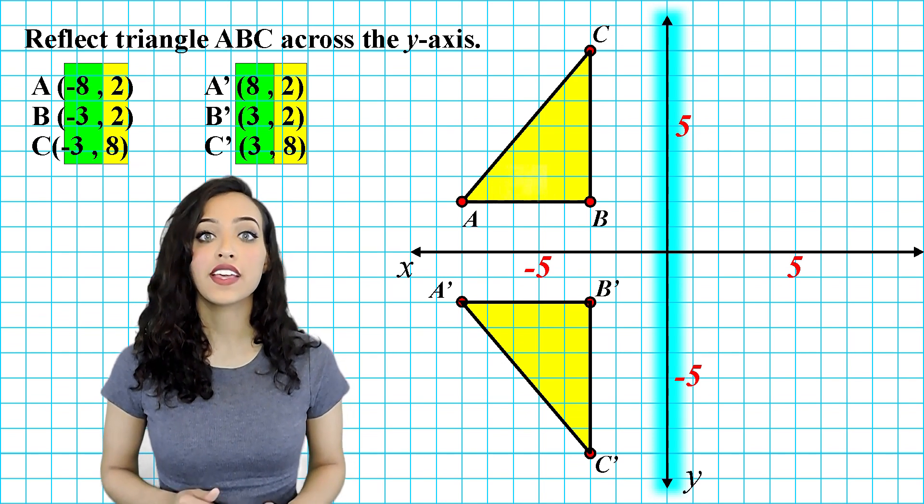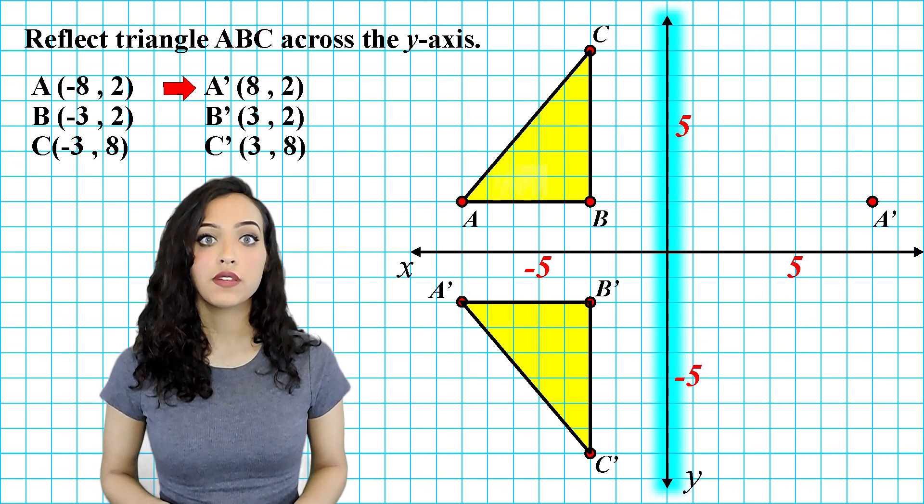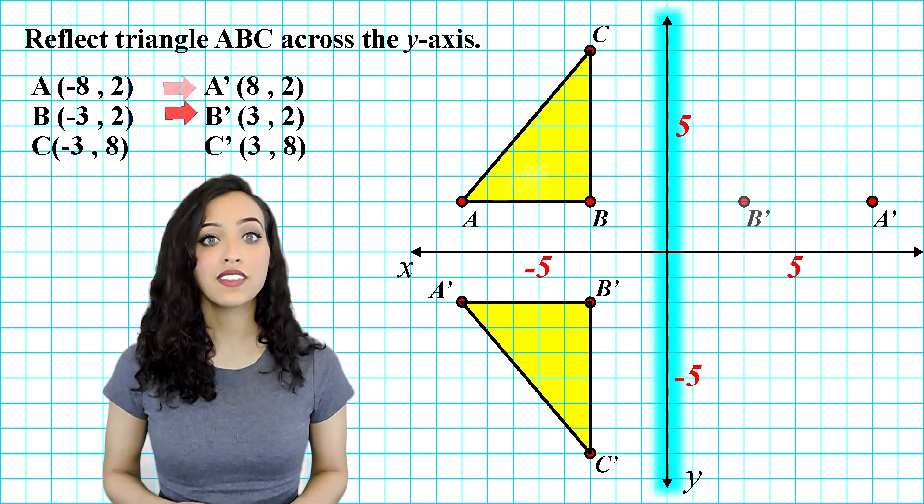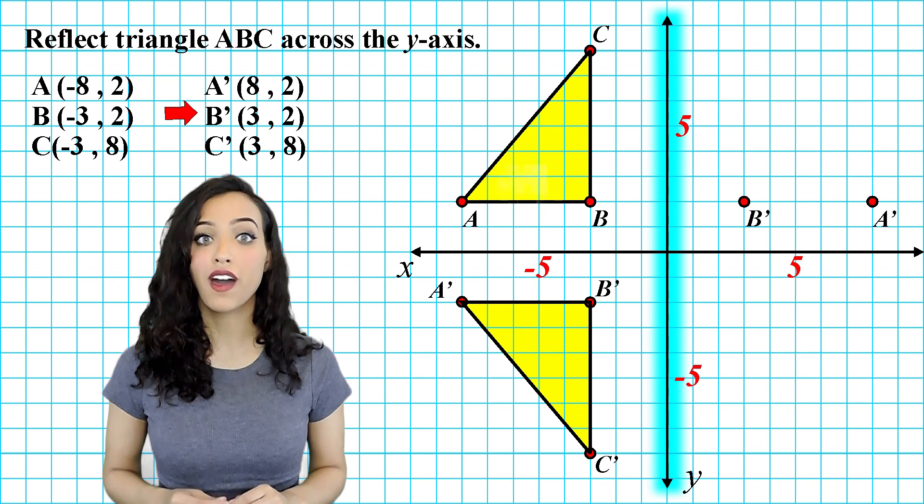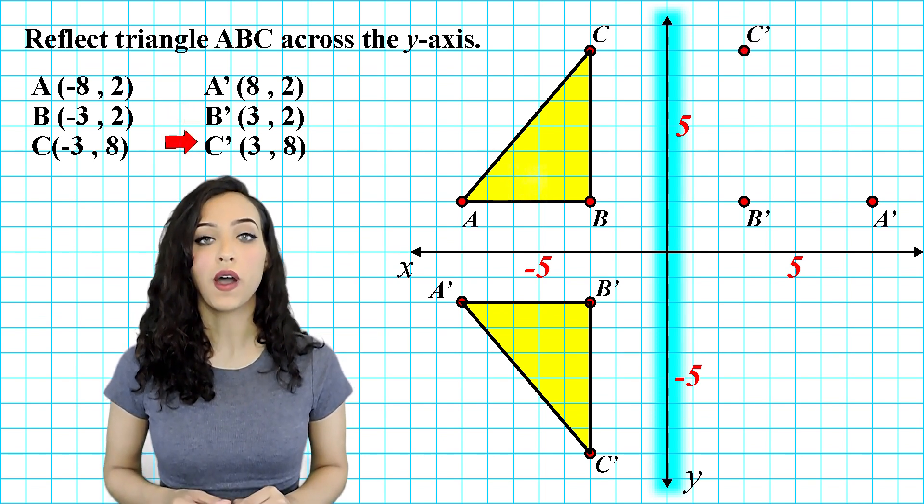Now that we have our new points, let's go ahead and plot our points. Point A is going to be reflected to positive 8 positive 2, Point B is going to be reflected to positive 3 positive 2, and Point C will be reflected to positive 3 positive 8.